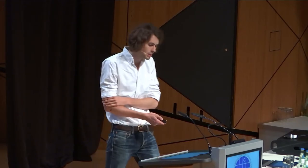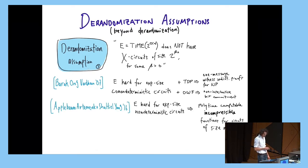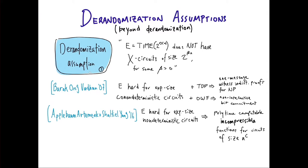Returning to derandomization assumptions, these assumptions have applications beyond simply derandomizing things. Barak and others showed that if you instantiate X with co-non-deterministic circuits, then with trapdoor permutations, you can have one message witness indistinguishable proofs for NP. If you combine this assumption with one-way functions, you can get non-interactive bit commitment.